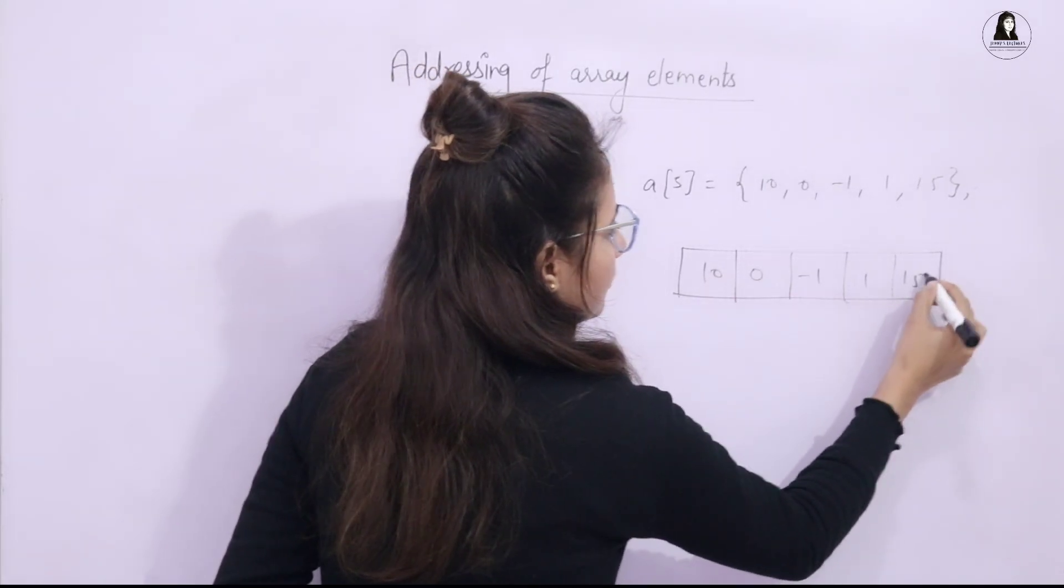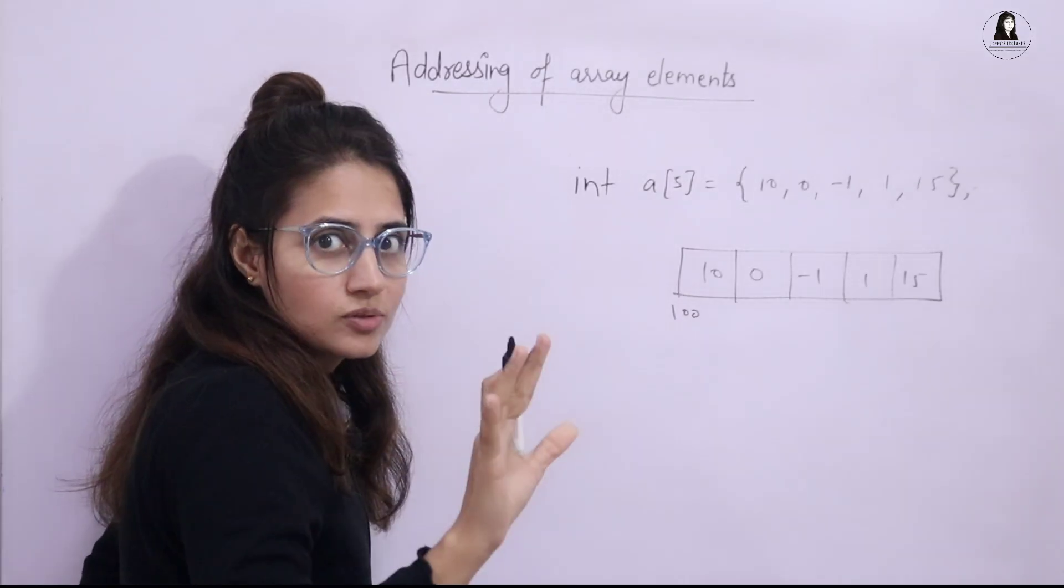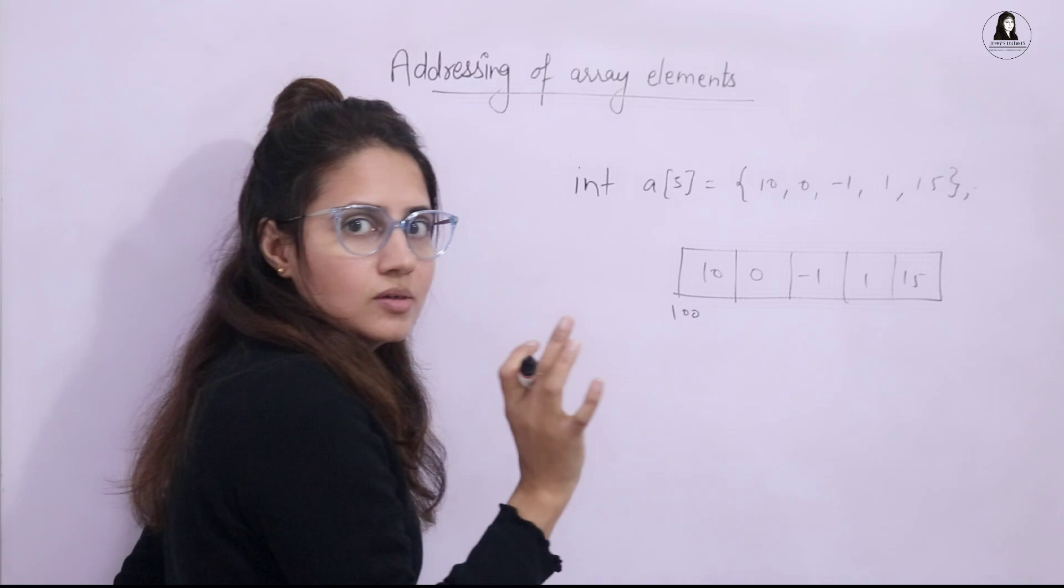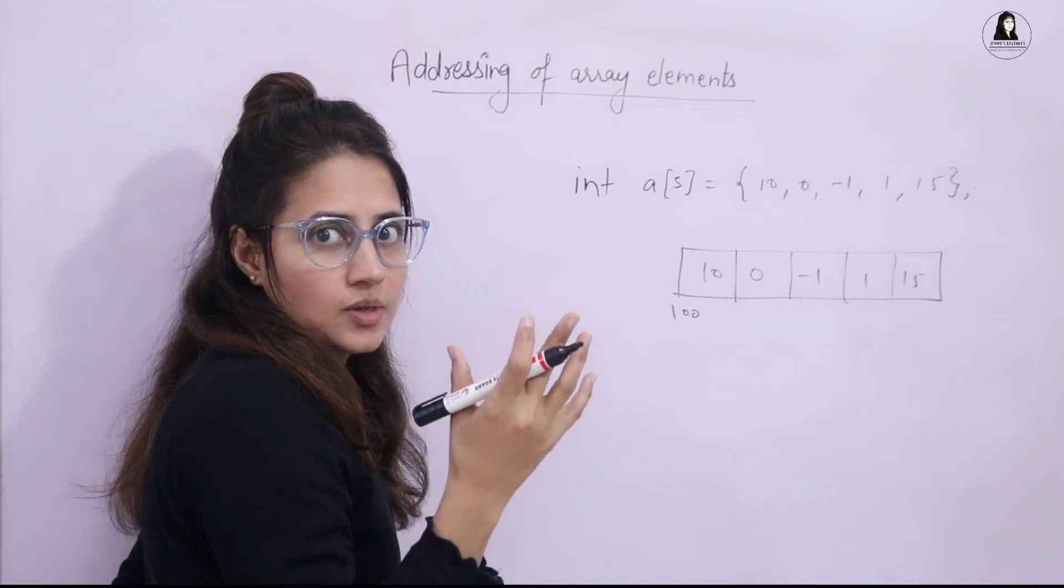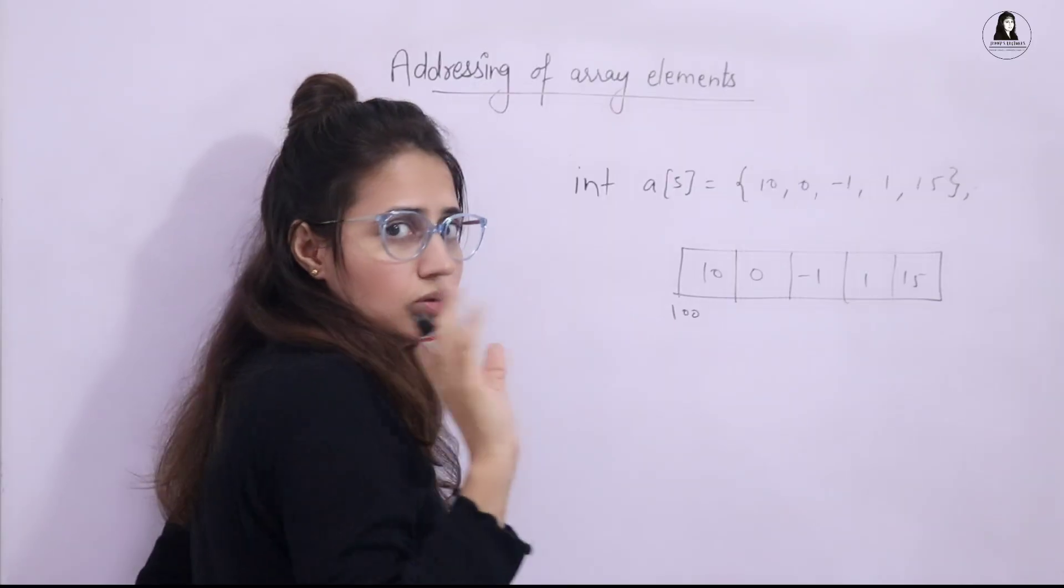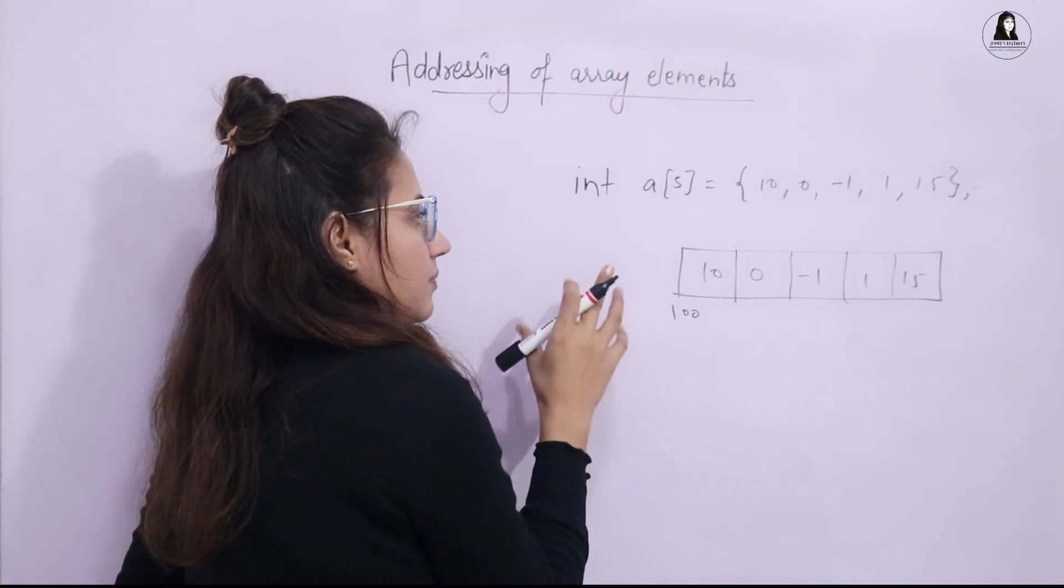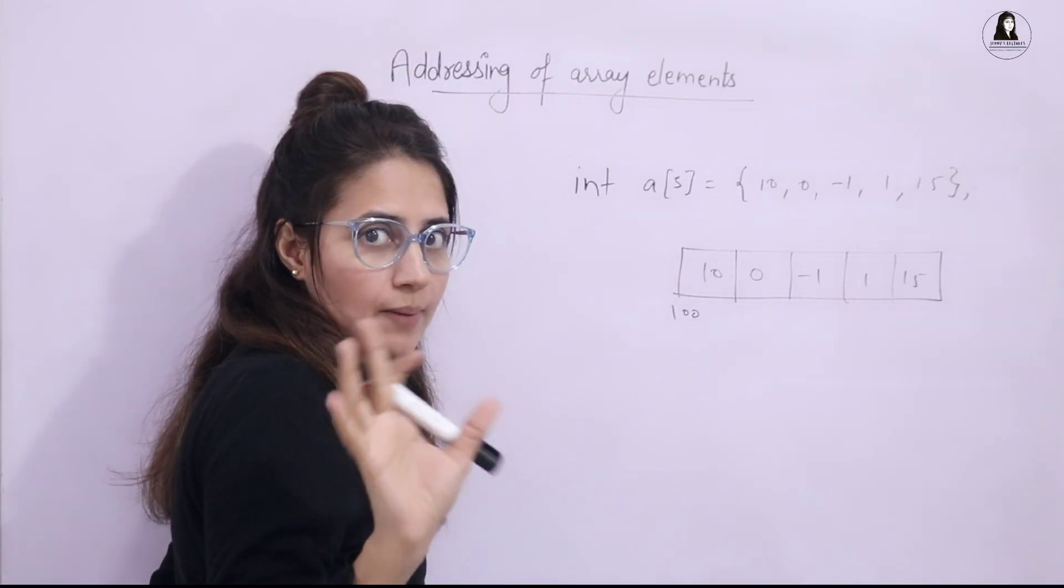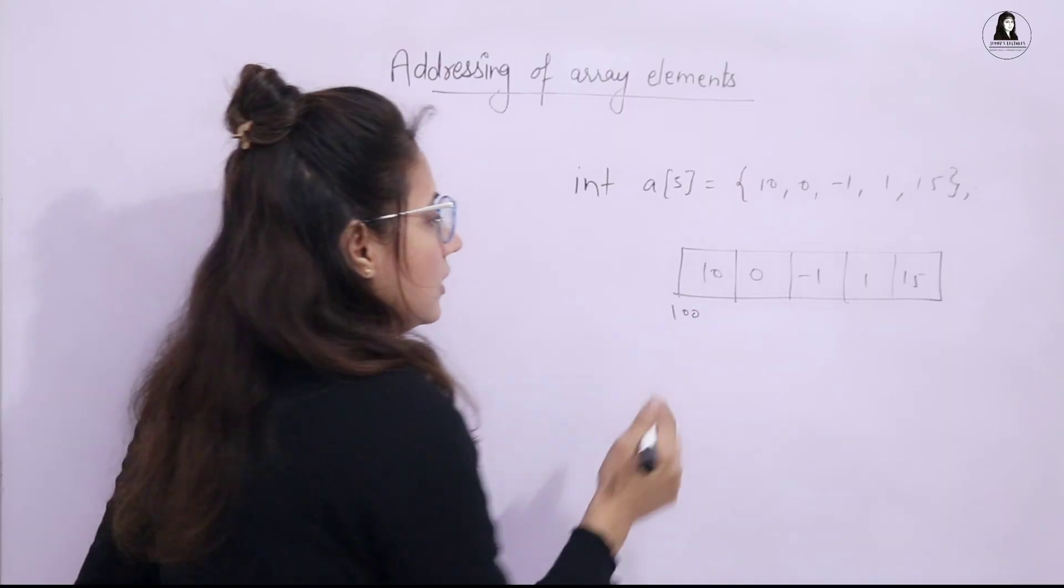So if the base address, suppose I don't know the address, suppose because that is in hexadecimal form. Suppose the address is 100, simple address I'm taking. So integer is going to take obviously 4 bytes. Actually, it depends on compiler also. But in my case, in my laptop, it is taking 4 bytes. So you can check out in your laptop. Size of int and you can just print that thing.